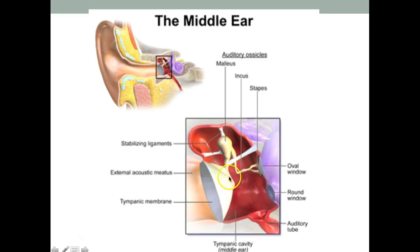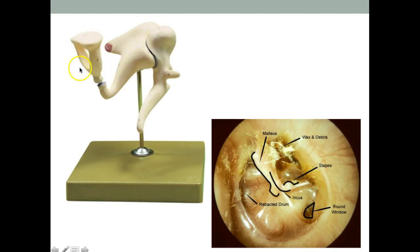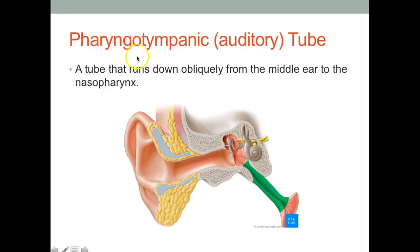Here's the tympanic membrane — it's going to vibrate, causing these three little bones to vibrate, and that vibration is going to be carried to the inner ear area. On this model: this one right here is the malleus, this is the incus, and this one right here is the stapes.